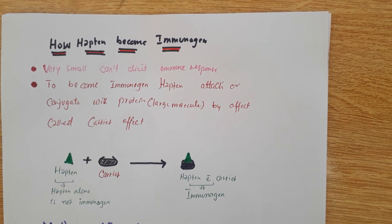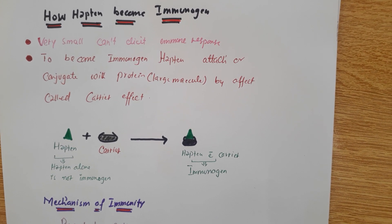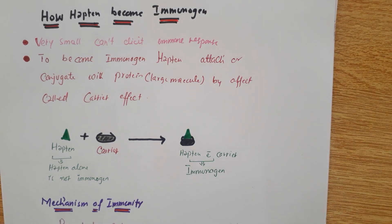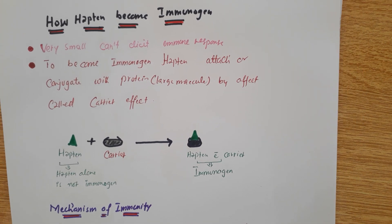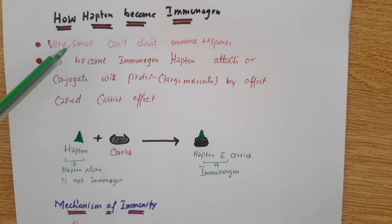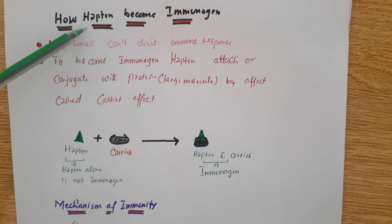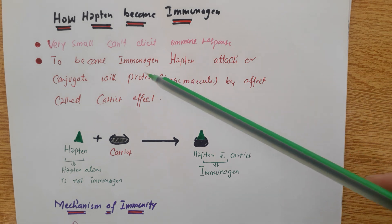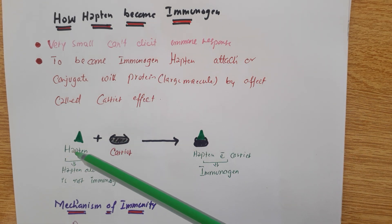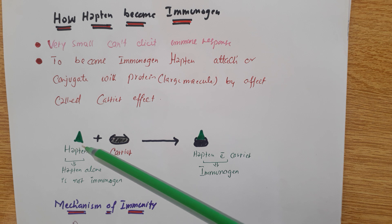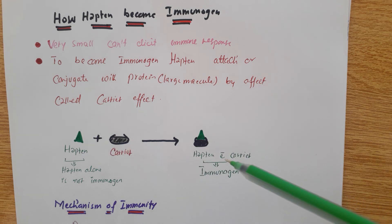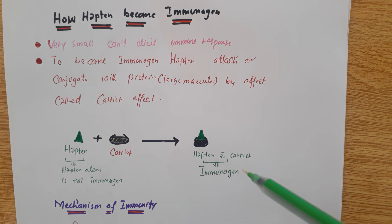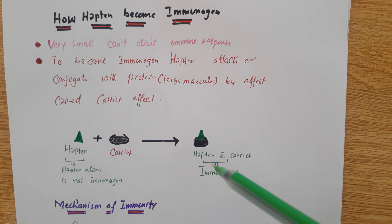This is how hapten becomes immunogen. The size of hapten is very small — molecular weight less than 6,000 daltons. This carrier protein will bind with hapten and then hapten becomes like this: hapten and carrier protein together are called immunogen, and they can elicit or stimulate the immune response.